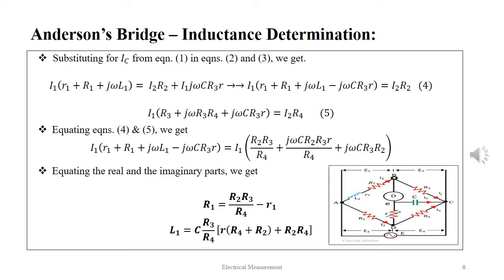Substituting for IC from equation 1 in equation 2 and 3 we get I1 into small r1 plus capital R1 plus J omega L1 equals I2 R2 plus I1 J omega C R3 r.